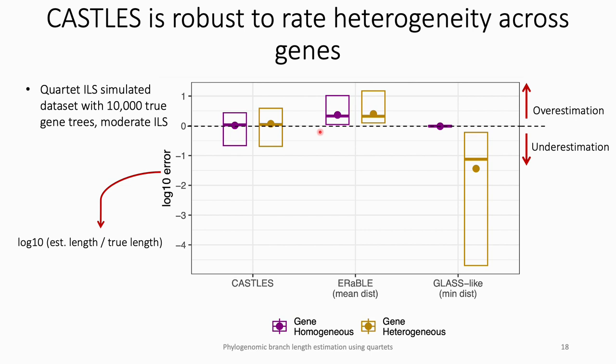The y-axis shows logarithmic error, which is ideally zero. Negative values indicate underestimation and positive values indicate overestimation. We have two conditions: one without rate heterogeneity across genes and one with rate heterogeneity. Without rate heterogeneity, the glass-like method produces nearly ideal branch lengths with error close to zero and no bias. But when rate heterogeneity is added — which always happens in reality — the error becomes too large with severe underestimation. CASEL and ARABLE are almost robust to rate heterogeneity across genes. The error on average is lower for CASEL, and while ARABLE has an overestimation bias in both conditions, CASEL is relatively unbiased on average.